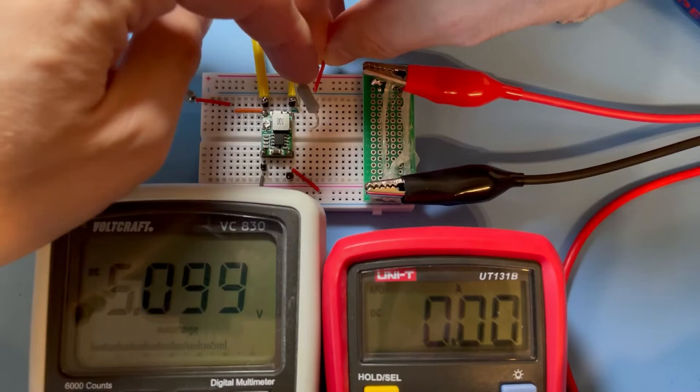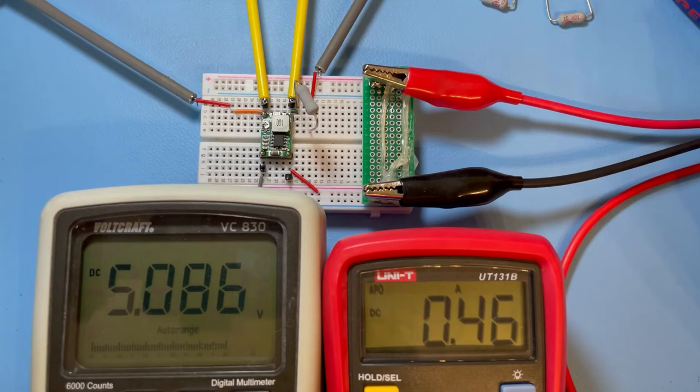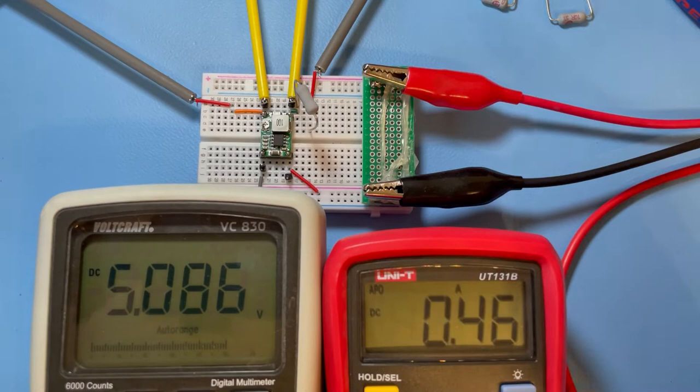We go down to 10 ohms now. That's the setup for with 5 volt for 500 milliampere. Now that is something. It's around 460 milliampere.